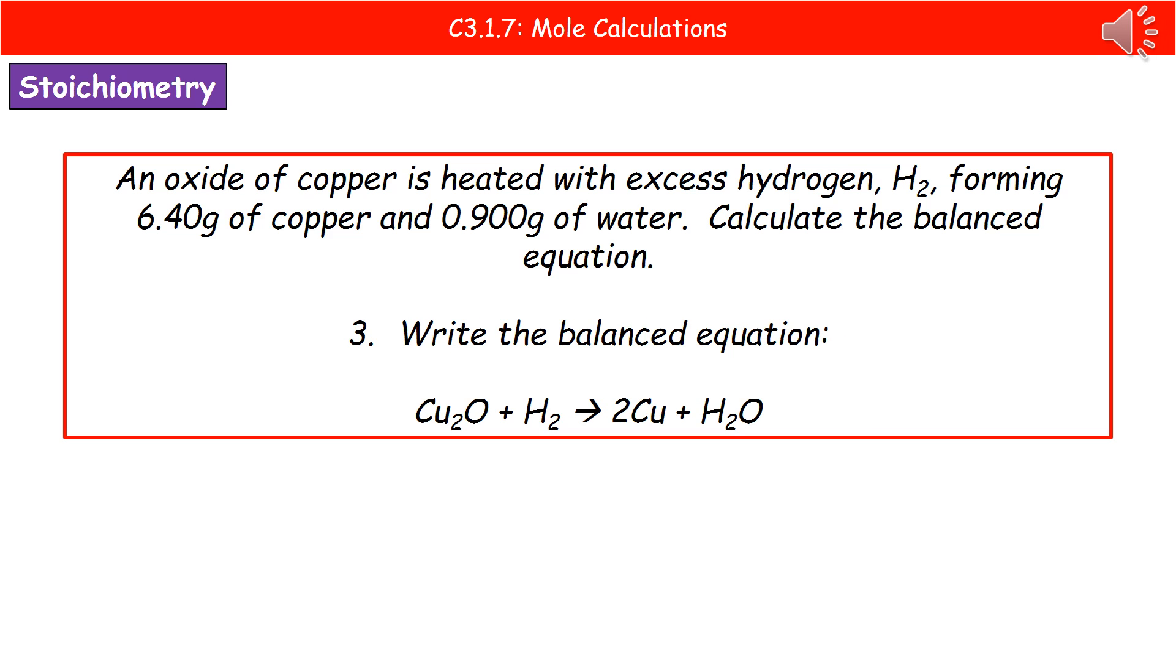The last thing that we do then is we write the balanced equation. We know that we are making 2 moles of copper. So on the right hand side there, you put your 2 in front of the symbol of copper, Cu, and 1 mole of water. So H2O just without the number in front, because we don't write 1s when it's just the 1. From that, we then need to work out our reactants. The question told us that we've got an excess of hydrogen, H2, so you can put that one in. And the only unknown then is the oxide of copper.